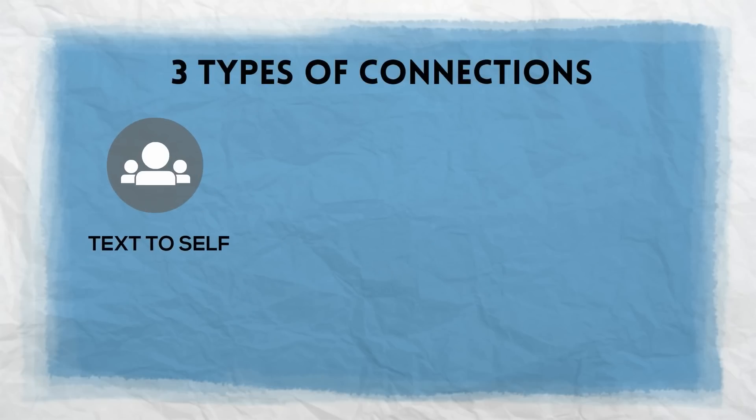Sometimes the easiest type of connection is a text-to-self connection. This is when you relate what you're reading to your own life, to your family or friends, or to something that happened to you or someone you know personally.